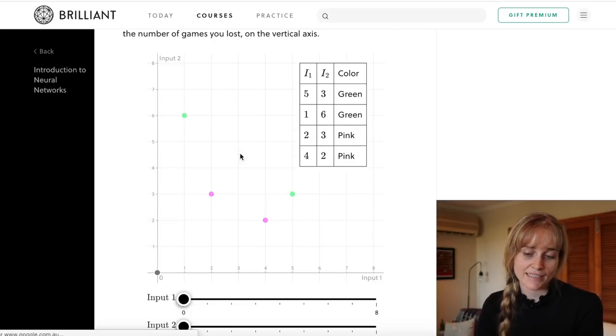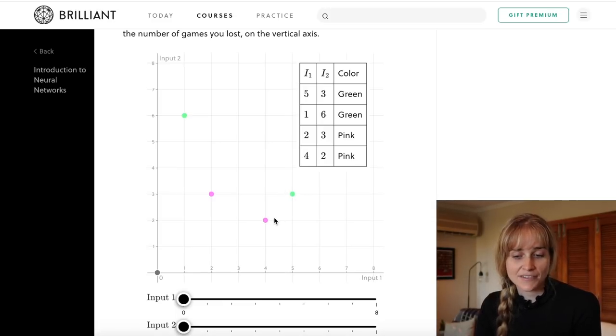If the data point is colored in green it means that the robot wanted to quit and if it's colored in pink that means it wanted to keep playing.